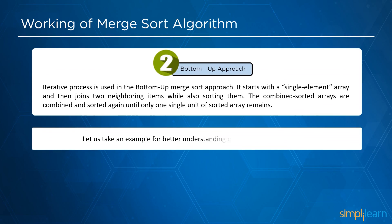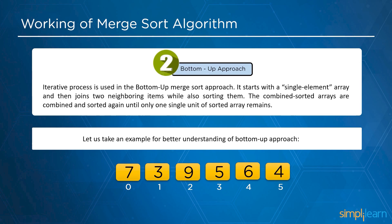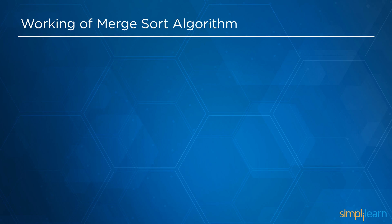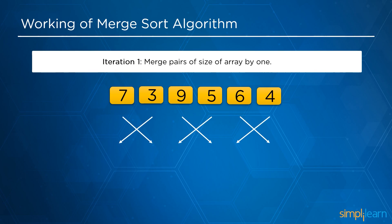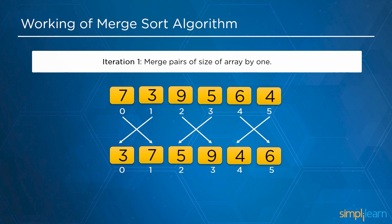Next, we will understand the bottom-up approach. An iterative process is used in the bottom-up merge sort approach. It starts with a single element array and then joins two neighboring items while also sorting them. The combined sorted arrays are merged and sorted again until one single sorted array remains. In the first iteration, we merge pairs of array size 1, sorting each pair: 7 and 3 become 3 and 7; 9 and 5 become 5 and 9; and 6 and 4 become 4 and 6.